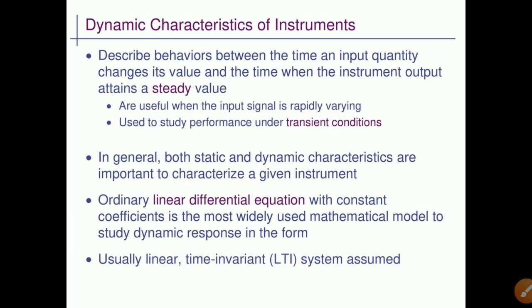When we give input to any instrument, that input quantity is changing with respect to time. If the input is changing with respect to time and the instrument shows you the output, then when that output attains a steady value — that relationship is called dynamic characteristics. In simple form: if you give an input which is varying with respect to time, then your output gets a steady state value. That time is called dynamic characteristics of instruments.